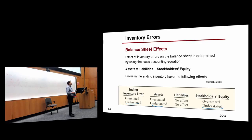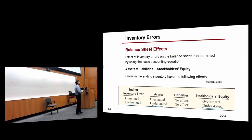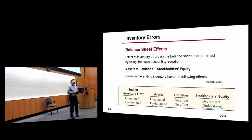We also learned that there are sometimes inventory errors, and those inventory errors would affect two periods usually. The net income for both years would be the same as the correct balance, mainly because the effect on year one would be offset by year two. Any questions about that?